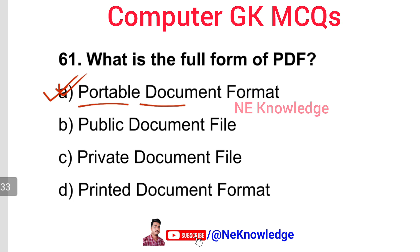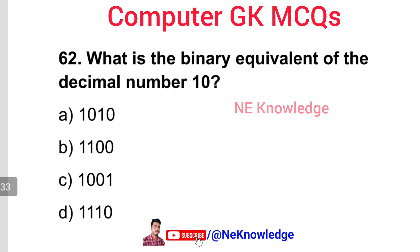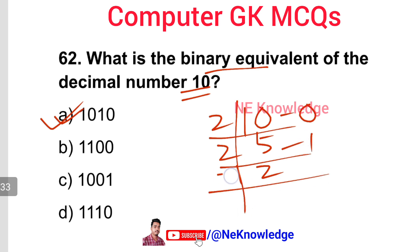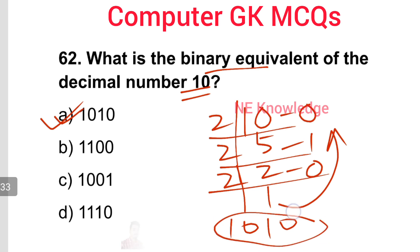Question number 62: What is the binary equivalent of decimal number 10? The binary equivalent of decimal 10 is 1010. To convert: divide 10 by 2 — remainder 0; divide 5 by 2 — remainder 1; divide 2 by 2 — remainder 0; divide 1 by 2 — remainder 1. Reading remainders bottom up: 1010. Option number A is correct.